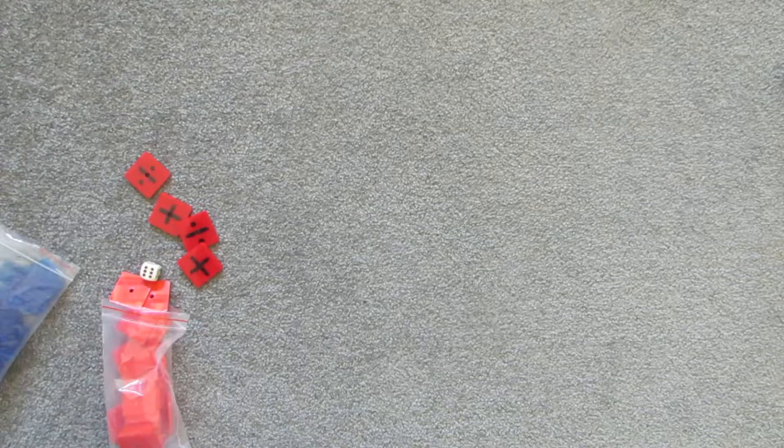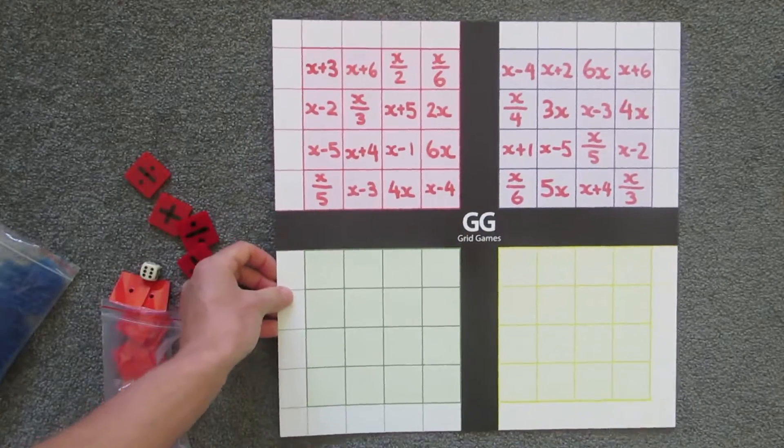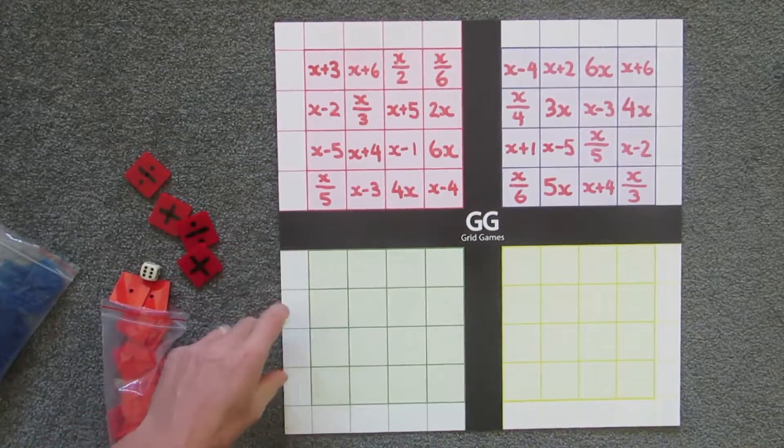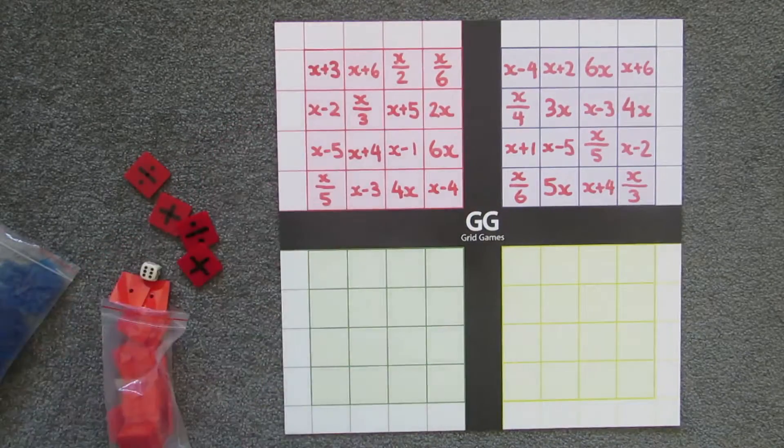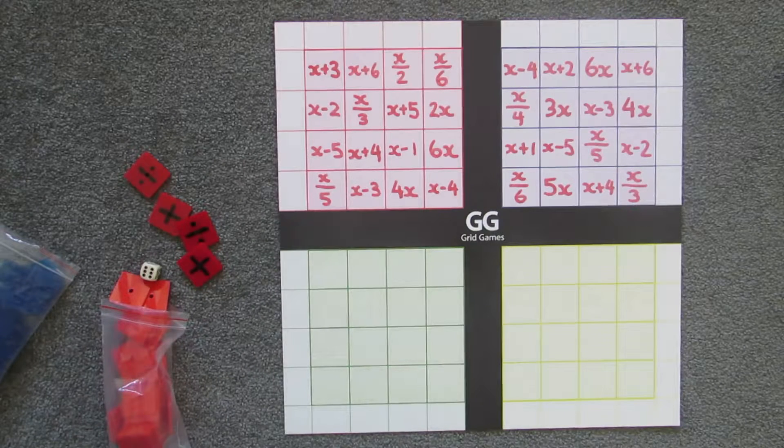The game begins with players creating a grid full of algebraic expressions. These shouldn't be repeated and they should only have the numbers from one to six, either times, minus, add or divide.